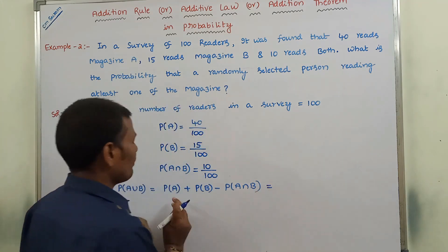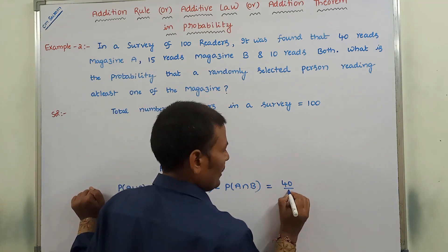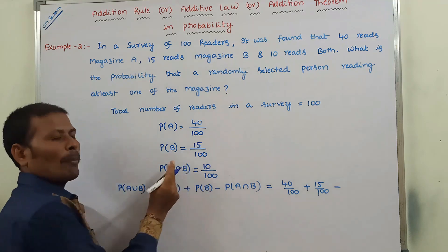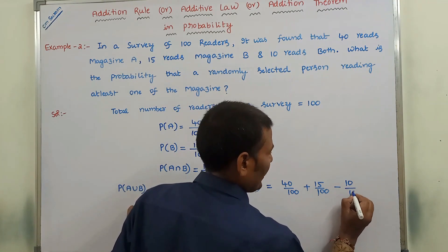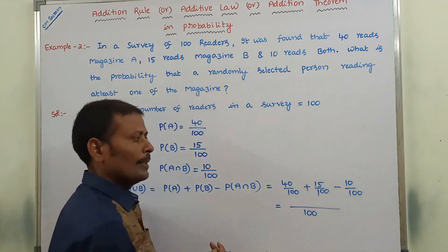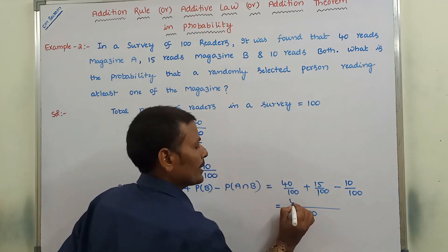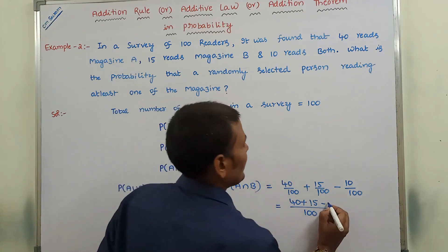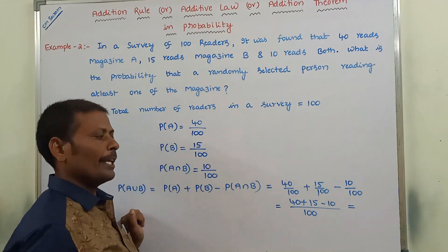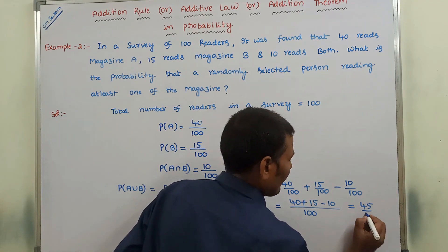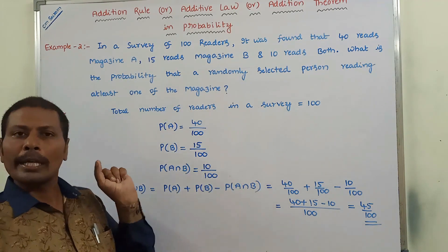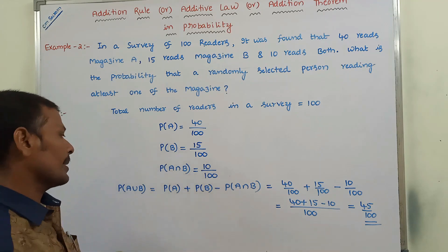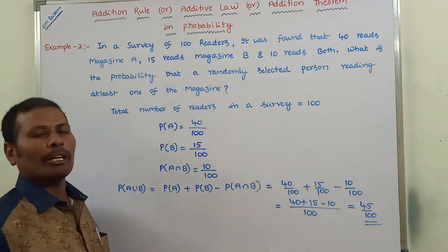Substituting the values: P(A ∪ B) = 40/100 + 15/100 − 10/100. Taking the LCM as 100: 40 + 15 − 10 = 45. So P(A ∪ B) = 45/100. The probability that a randomly selected person reads at least one magazine is 45/100.